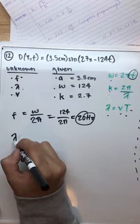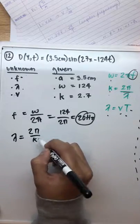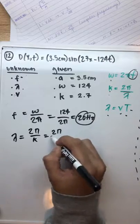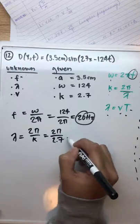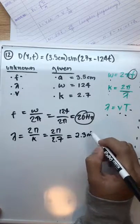So our wavelength is going to be equal to 2 pi over k, which is 2 pi over 2.7, and we end with a wavelength of 2.3 meters.